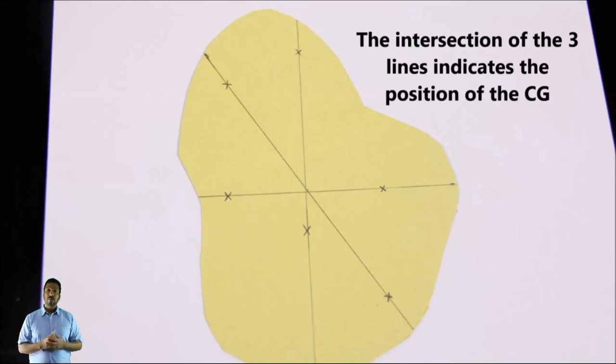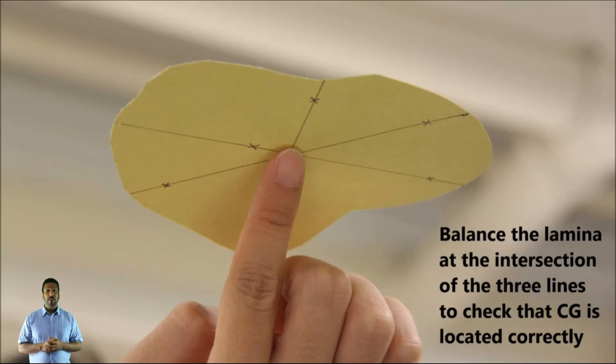The intersection of the three lines indicates the position of the center of gravity. And then you can balance the laminar at the intersection of the three lines to check that your center of gravity is located correctly.